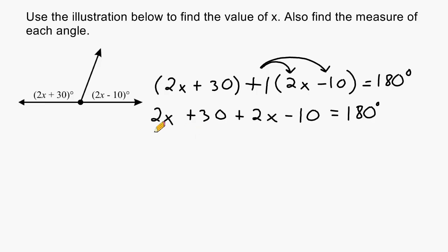The next thing that we are going to do is combine like terms. So we can combine the 2x to this 2x giving us a sum of 4x. And then we can combine the 30 with the minus 10 and 30 minus 10 is a total of 20. So now we have the equation 4x plus 20 is equal to 180 degrees.